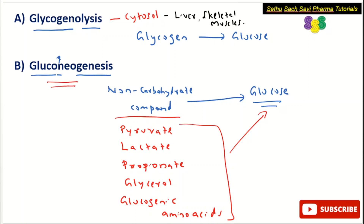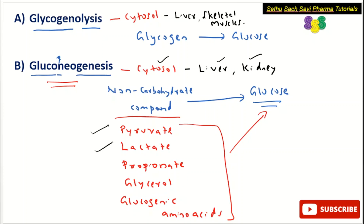Where does gluconeogenesis happen? It occurs in the cytosol — mainly in the cytoplasm of the liver and kidney. So gluconeogenesis happens in the cytoplasm of liver as well as kidney, and it is the synthesis of glucose from non-carbohydrate compounds like pyruvate, lactate, propionate, glycerol, or glucogenic amino acids.